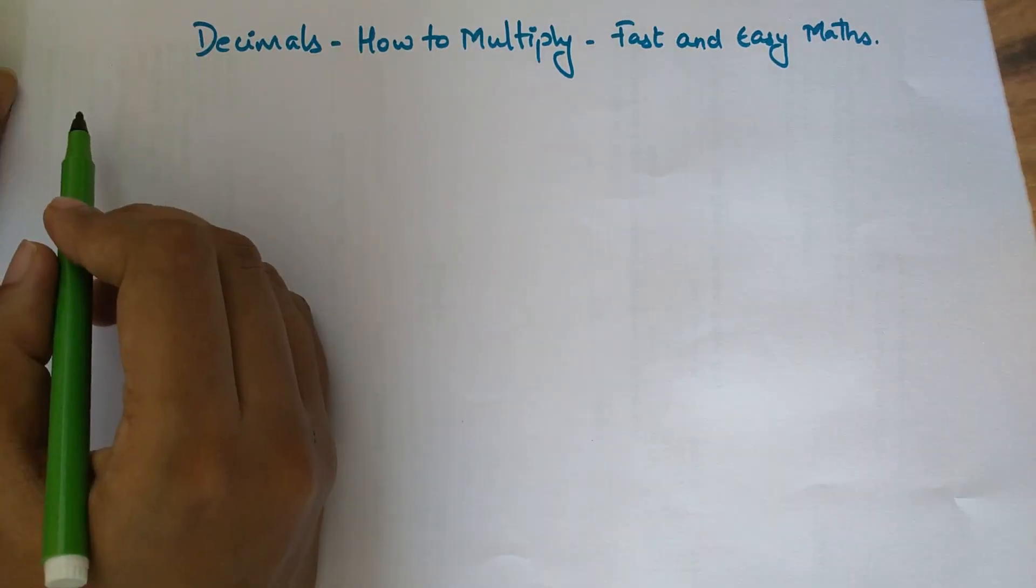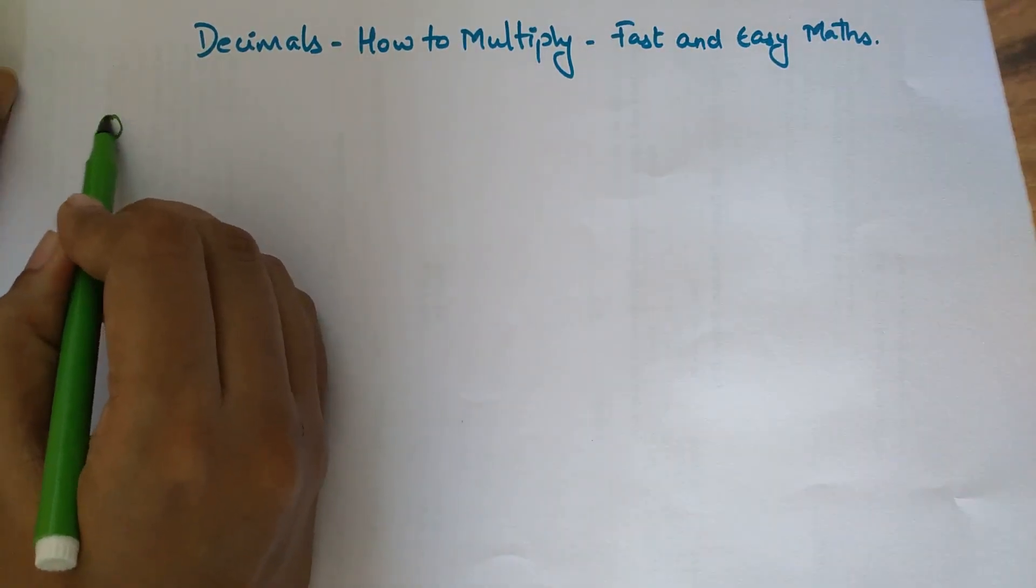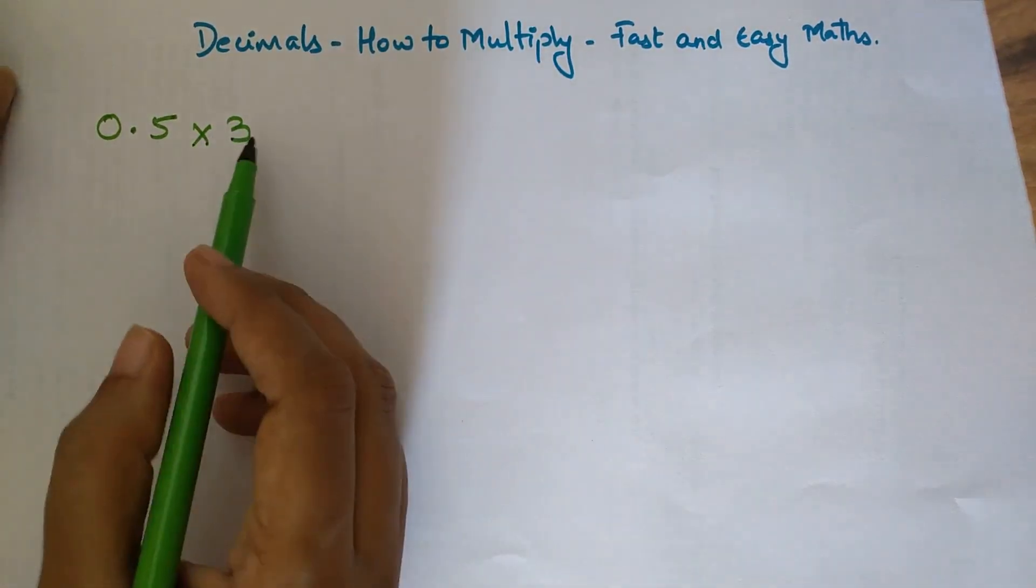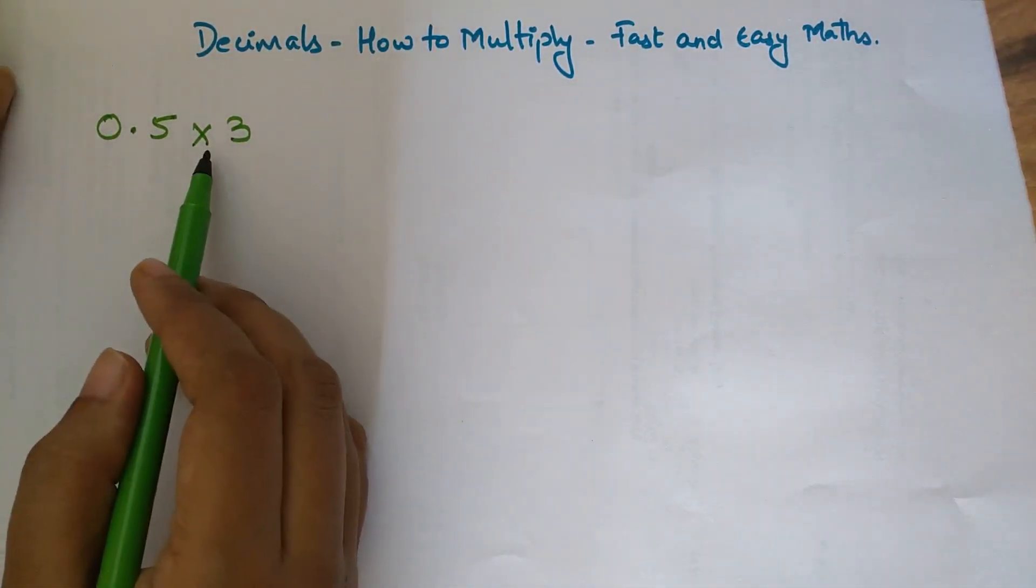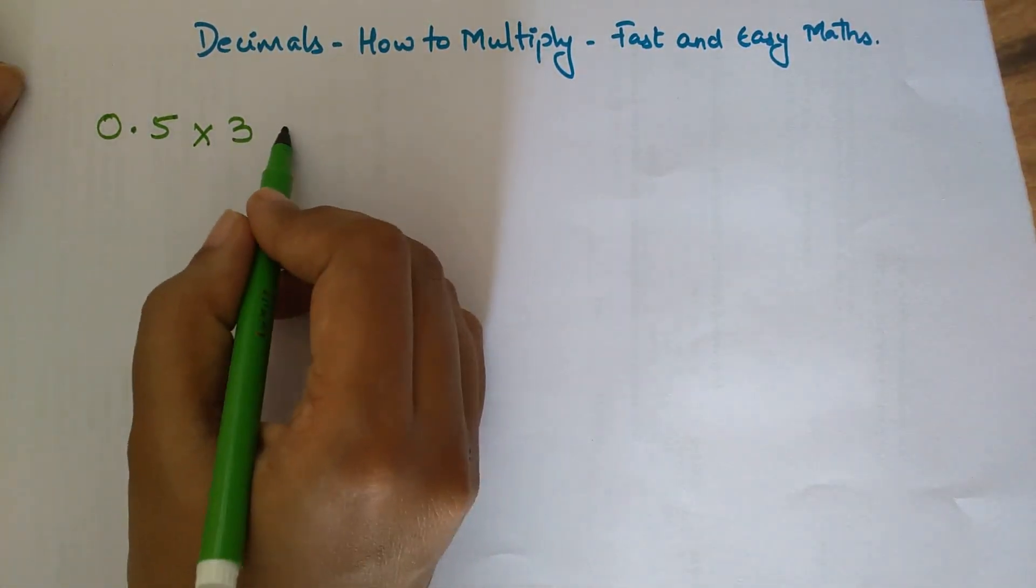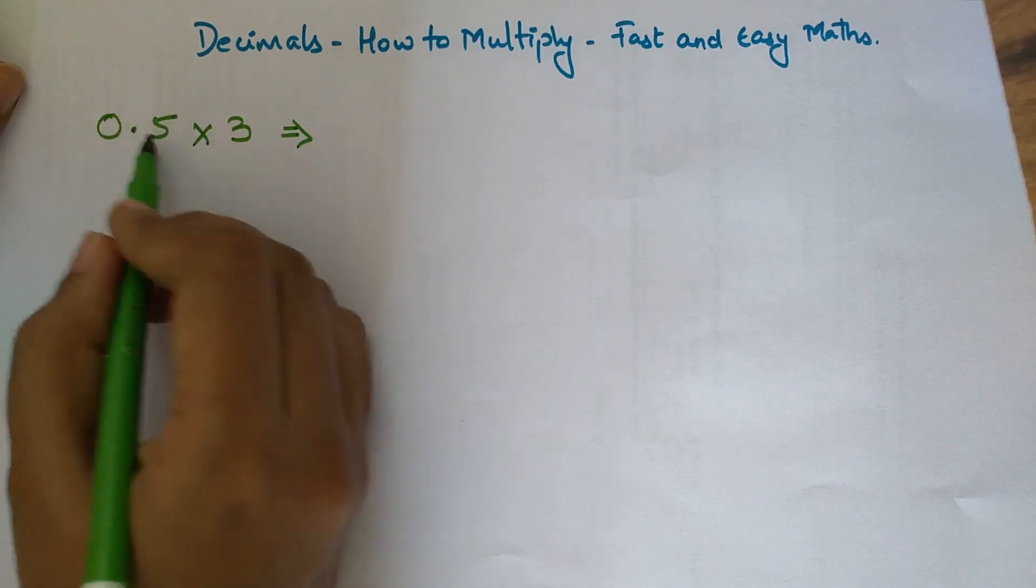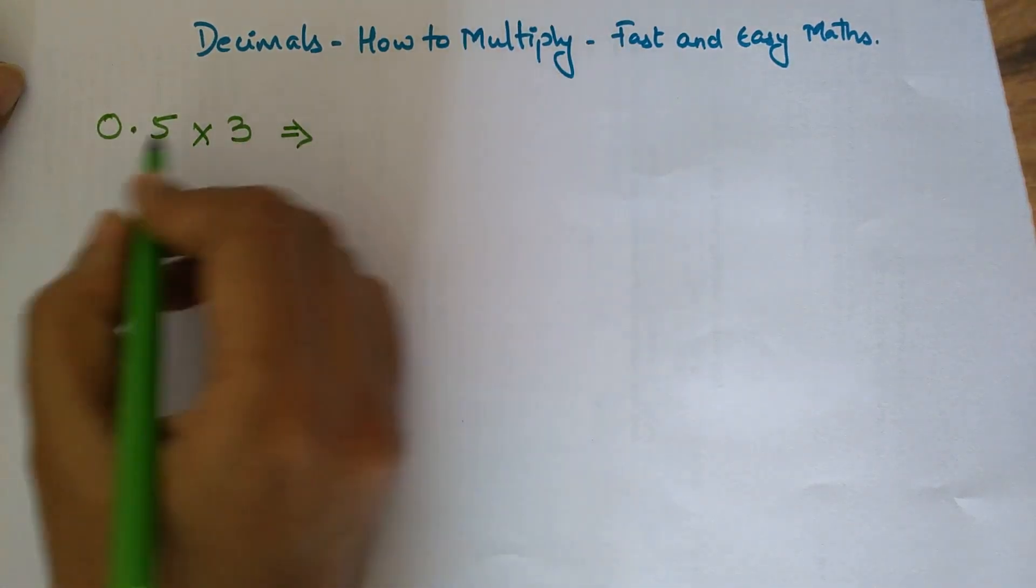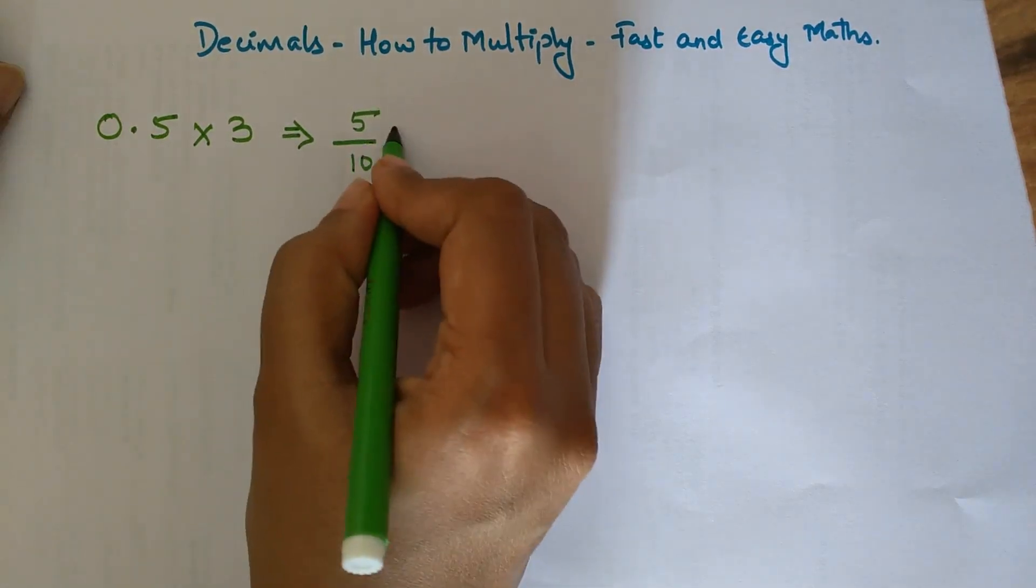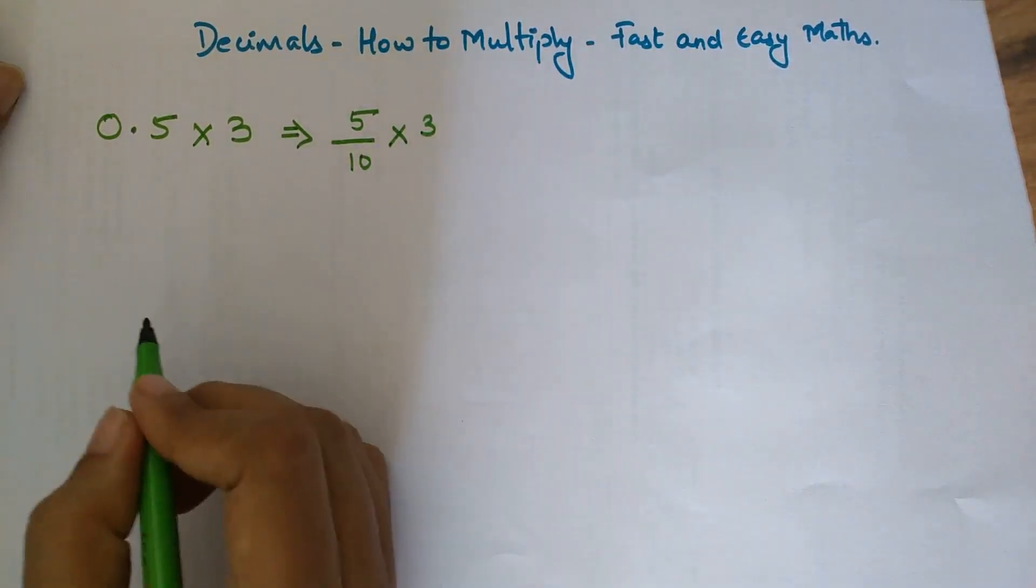Let's first see how to do multiplication of 0.5 into 3. This is a very simple example. Before actually doing the multiplication, let's first convert the decimal number into a fraction. So 0.5 can be written as 5 upon 10, and that gets multiplied by 3.